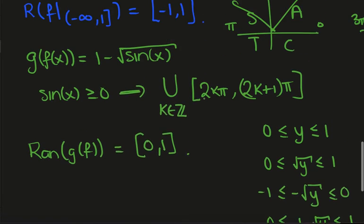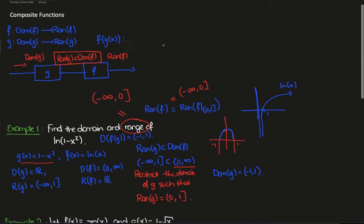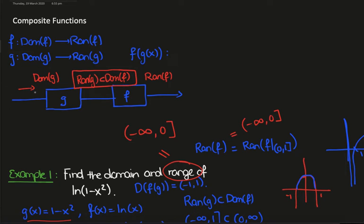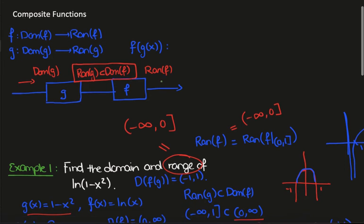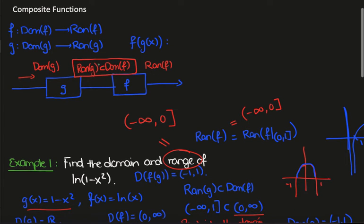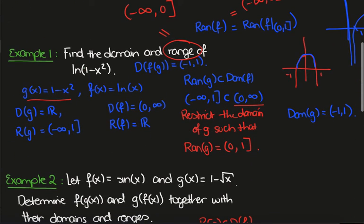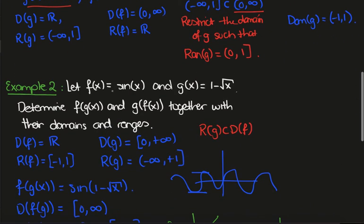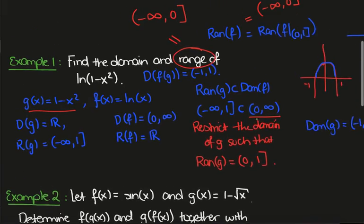To review what we covered: for composite functions, look at the domain of the first function and check what comes out — whatever comes out must be able to go into the second function. If it doesn't fit, restrict the range by restricting the domain accordingly. To find the range of the composite, look at the range of f restricted to the range of g, since the range of g is the new input for f. We looked at ln(1 - x²) and the composites f∘g and g∘f when f was sin(x) and g was 1 - √x.